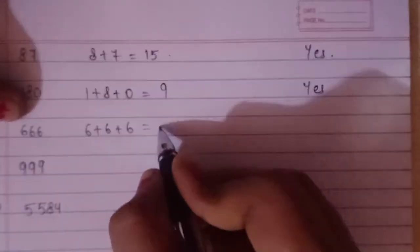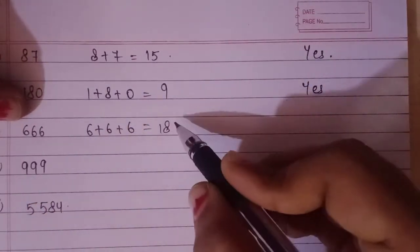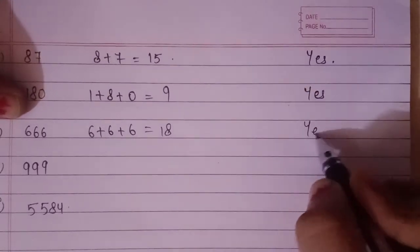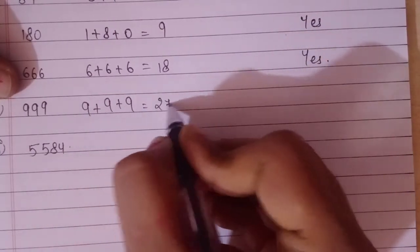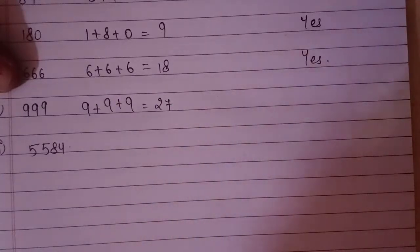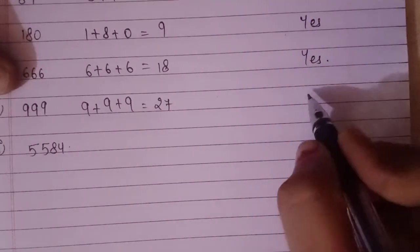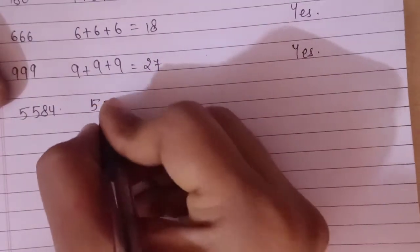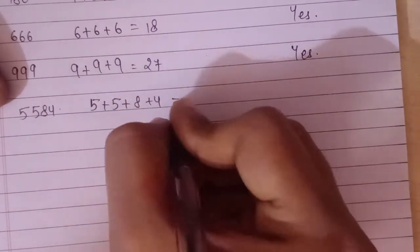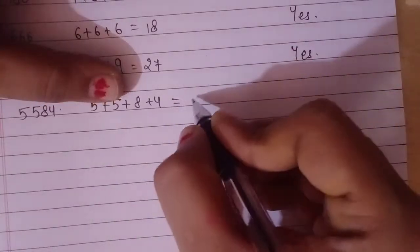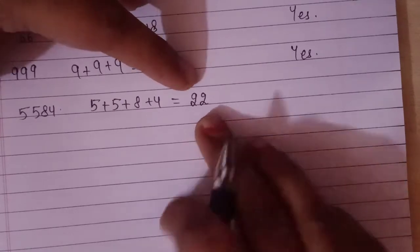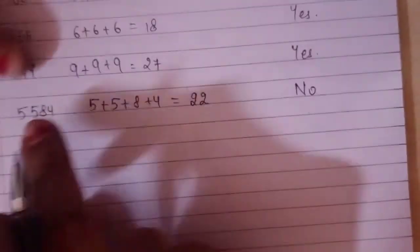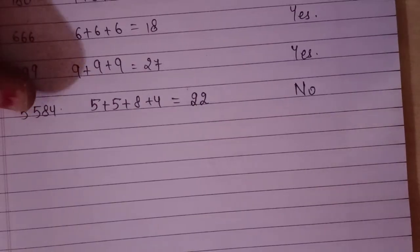Next is 666: sum is 18, divisible by 3 — answer yes. Next: sum is 27, and 3 times 9 is 27 — answer yes, this number is completely divisible by 3. Now let's check the next: digits 5, 5, 8, and 4 give a sum of 22. Does 22 come in the table of 3? No, 3 times 7 is 21. So the answer is no. If the sum is not divisible by 3, the number is also not divisible by 3.